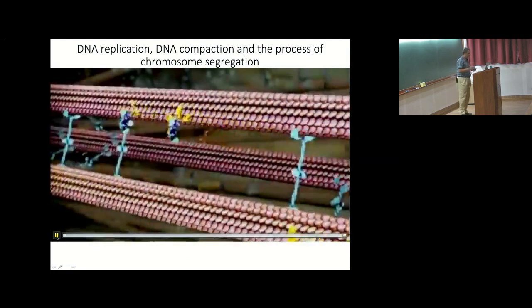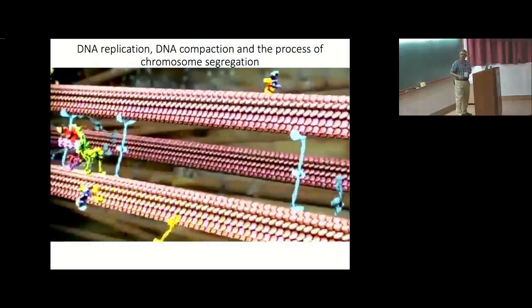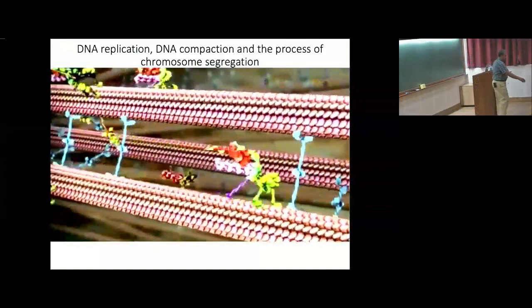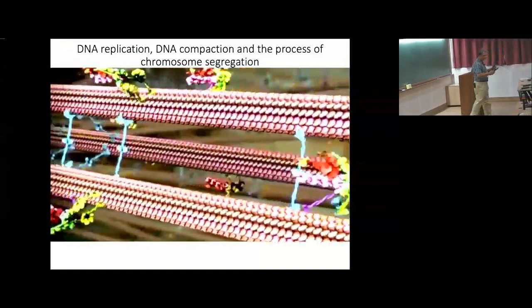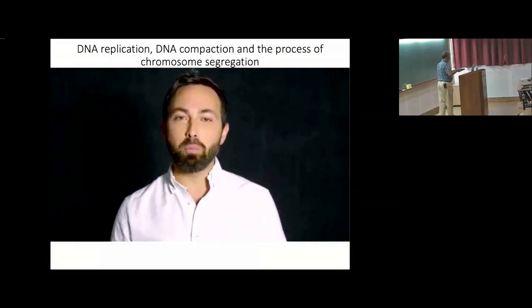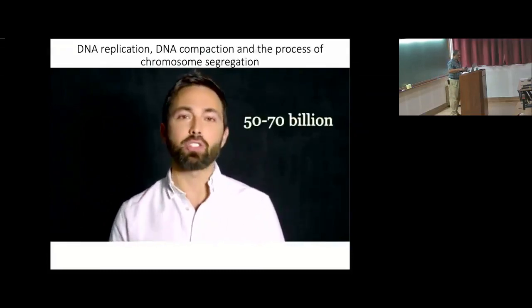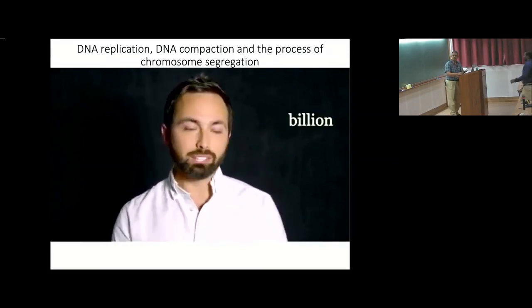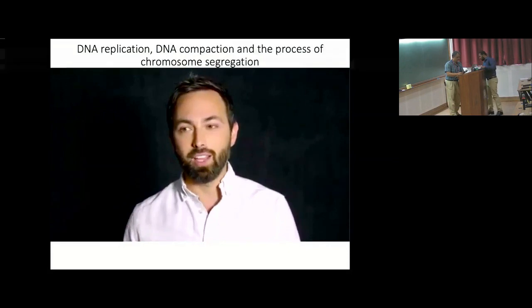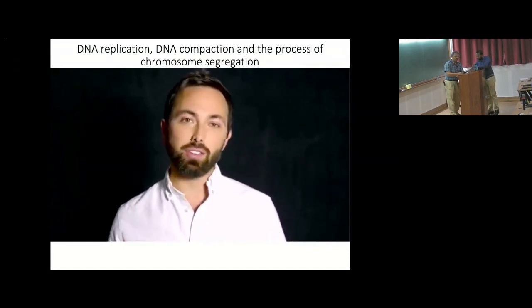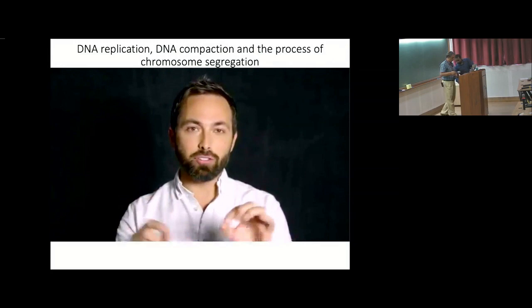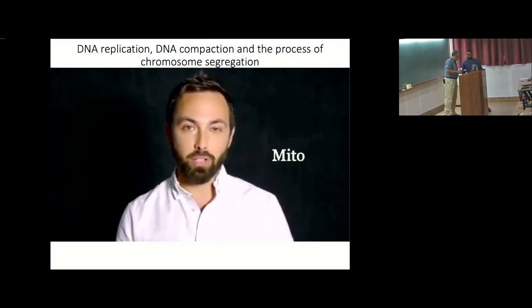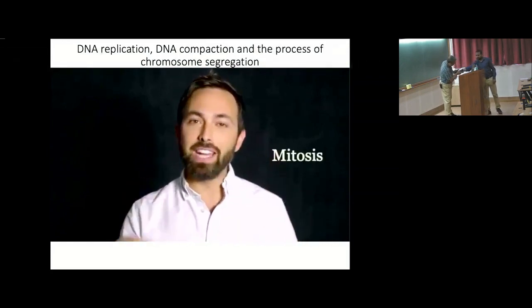These are tiny molecular machines, and they are doing this inside your body right now. Every day in an adult human body, 50 to 70 billion of your cells die—they're stressed, damaged, or just old. This is normal; it's called programmed cell death. But to make up for these losses, billions of your cells are creating new cells through cell division, also called mitosis.